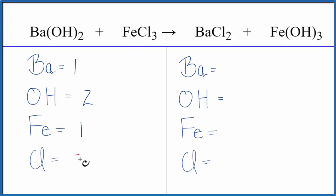One iron and three chlorine atoms. On the product side of the equation, one barium, then three of our hydroxides, one iron, and then chlorines, we have two.